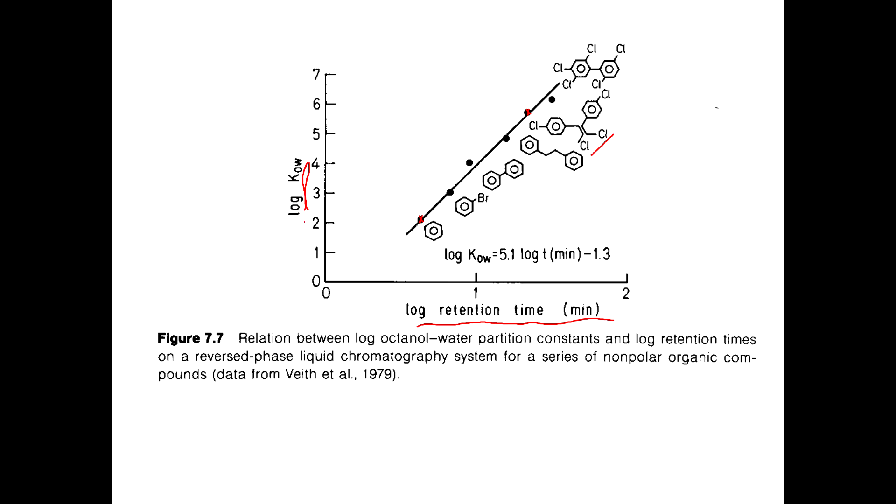And this is actually pretty accurate and it's really pretty easy. So KOW is one of the easier things to actually measure. Aqueous solubility is tough, Henry's law constant is tough, but KOW is relatively easy.